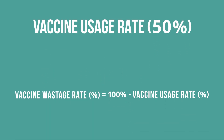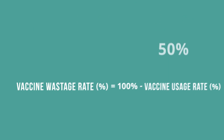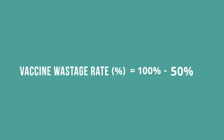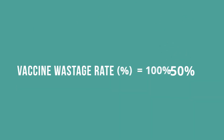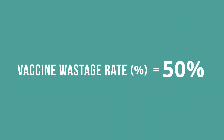Now, to find your vaccine wastage rate, subtract your vaccine usage rate from 100%. 100% minus 50% equals 50%. 50% is a typical wastage rate for BCG.